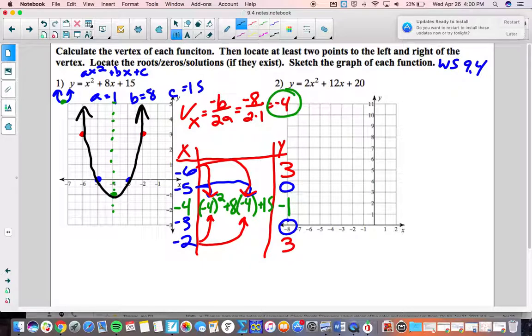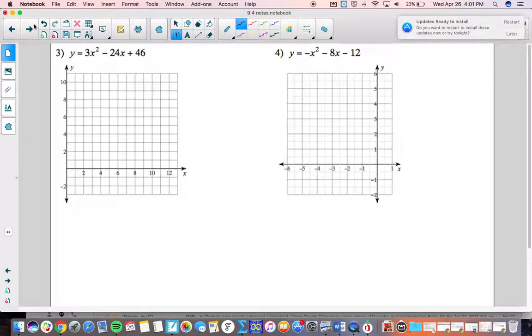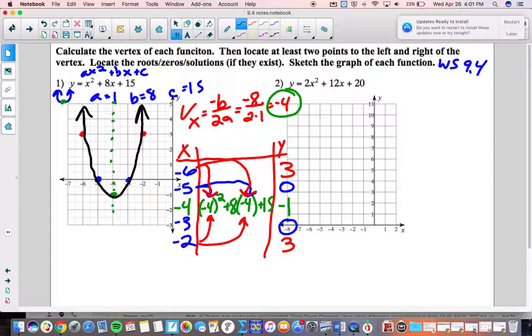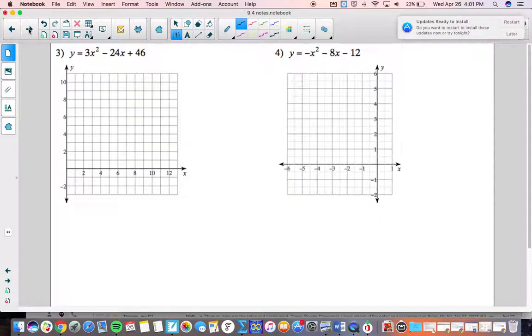Alright there's number 1, I'm going to do number 4 next. Number 4 might play some tricks on you so let's identify our A, B, and C. A is negative 1, that's part of the tricky part. What makes this one tricky for folks is that negative right there and it doesn't just bite us here, sometimes it bites us as we fill out the table.